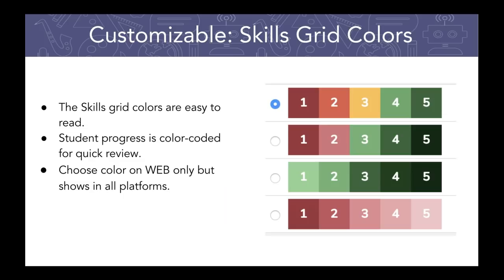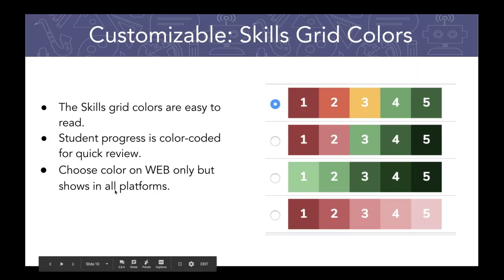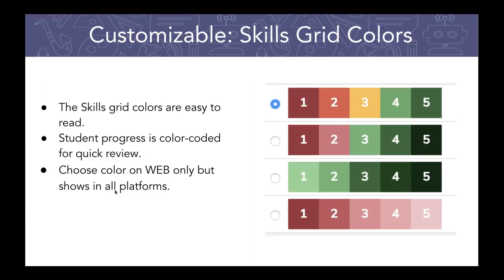You can also customize the grid color. If you're giving a student one star, it will be denoted by a color, and you can rate up to five or six stars depending on your scale. You can choose the color that speaks to you so progress is color coded and easy to read. You're able to choose this color on the web only, at app.seesaw.me, but it shows up on every single platform.